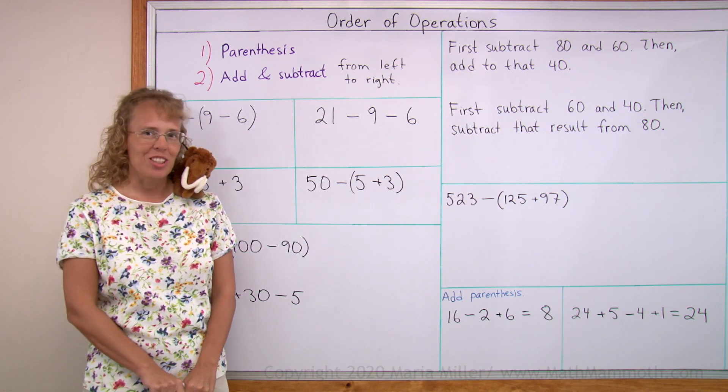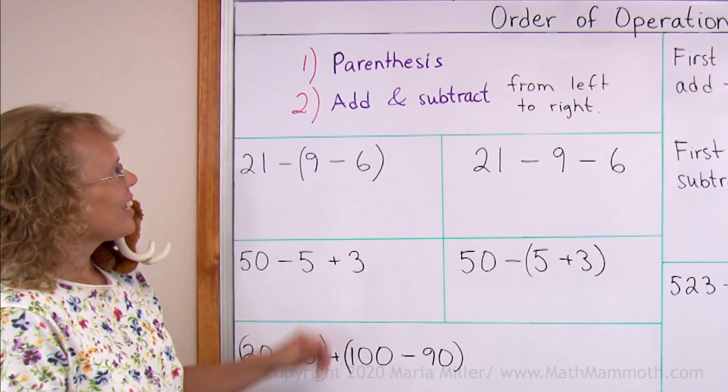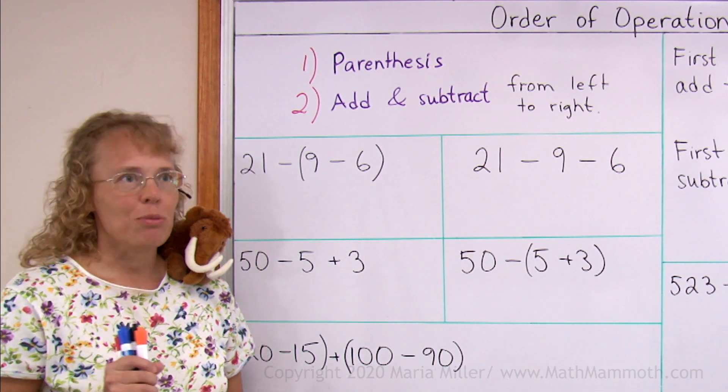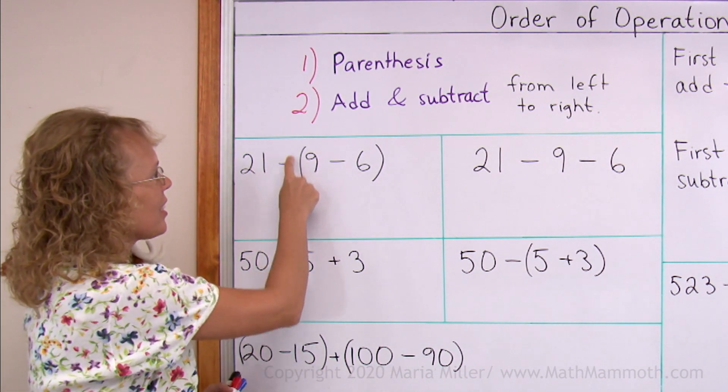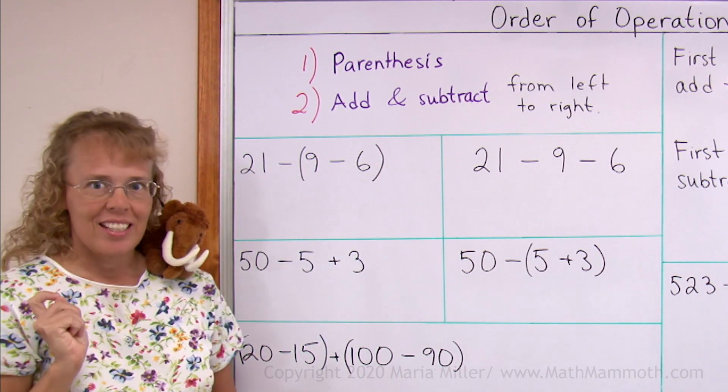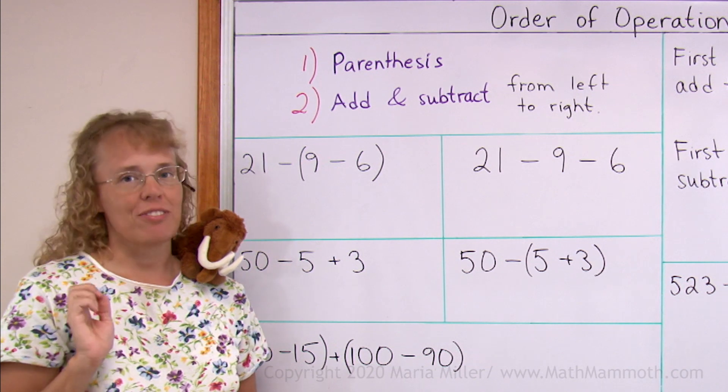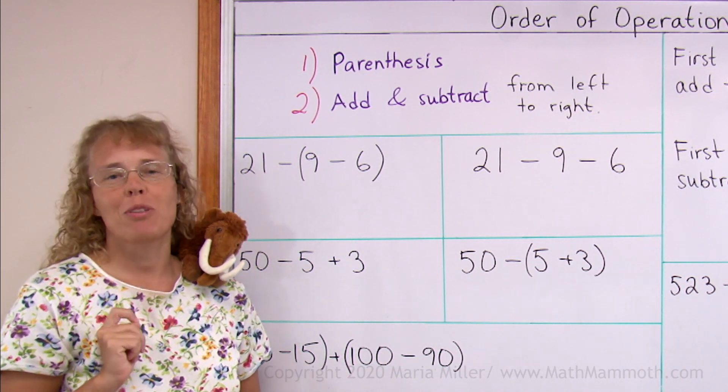For this lesson we only have two operations to deal with, addition and subtraction. So that makes it easy, sort of. The order of operations is that we first solve whatever is inside parentheses, inside these things here. And then we add and subtract from left to right. Examples will make this clear.